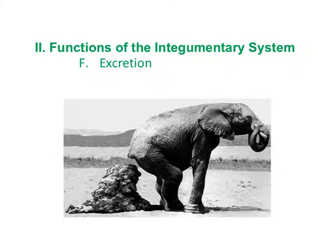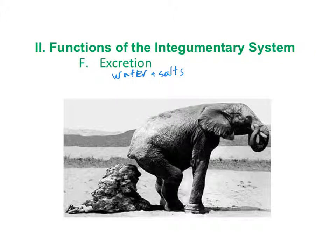The sixth function of the integumentary system is excretion. The body can get rid of primarily water and salts when we sweat, but we also lose small amounts of nitrogenous waste, which is the metabolic byproduct of digesting proteins.